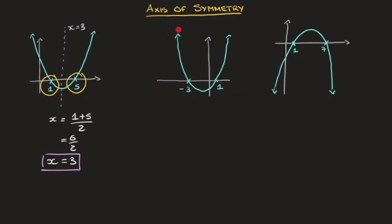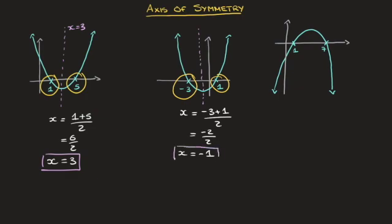Looking at the next parabola we have here, we can see that it crosses the x-axis at negative 3 and at 1. And so using the same method, we can state that the axis of symmetry has equation x equals negative 3 plus 1 over 2. That leads us to negative 2 over 2. Finally, x equals negative 1. And once more, I go ahead and box that result. And I'll label the axis of symmetry, x equals negative 1.